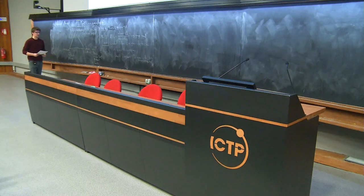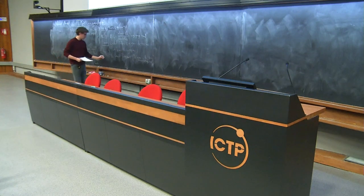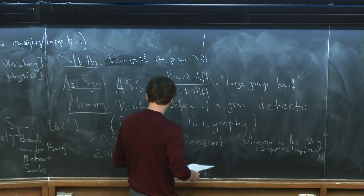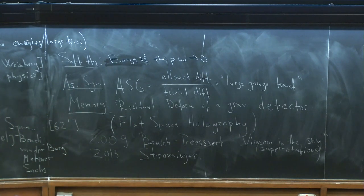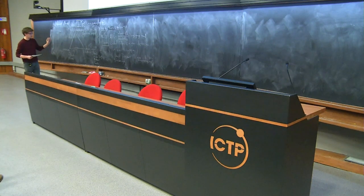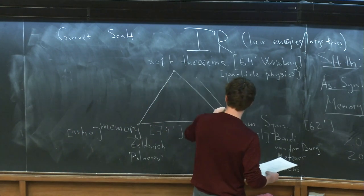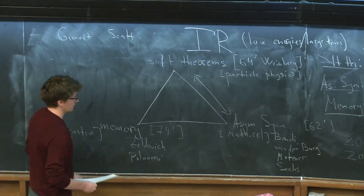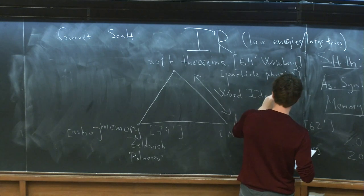People got excited and were trying to understand what it means. Then the real flood opened in 2013 with a paper by Strominger, who was able to understand at least two points of the triangle corner. If these things are all the same, you should draw the connection between them. He knew enough about mathematical relativity and particle physics at the same time to understand what the relation is. He showed that the soft theorem is the Ward identity of the asymptotic symmetry.